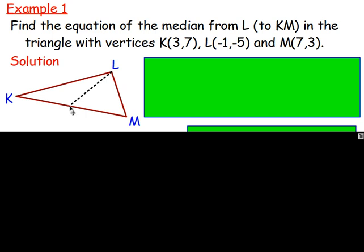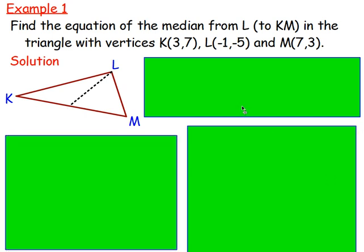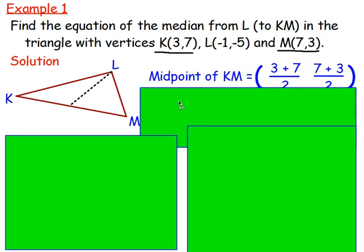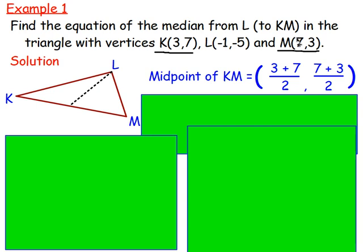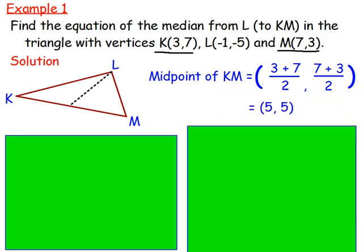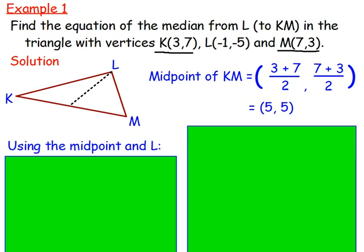From the diagram, you can see the median goes from L to the midpoint of KM. To find the midpoint of KM, use points K and M: add the x-values together — 3 add 7 — then halve them, and for the y-values do 7 add 3 then halve them. That gives you the point (5, 5), so the midpoint of KM is (5, 5).